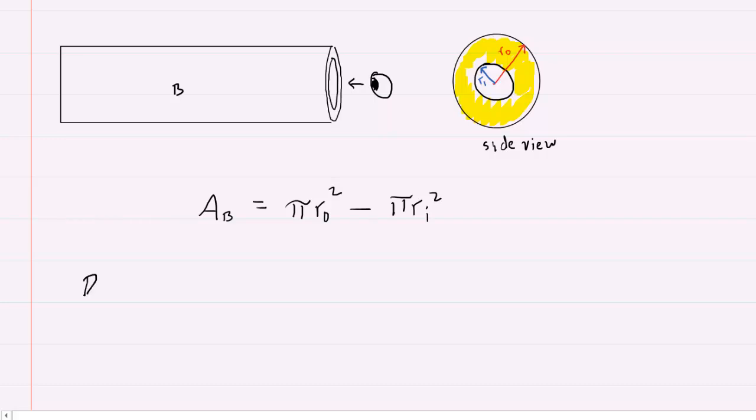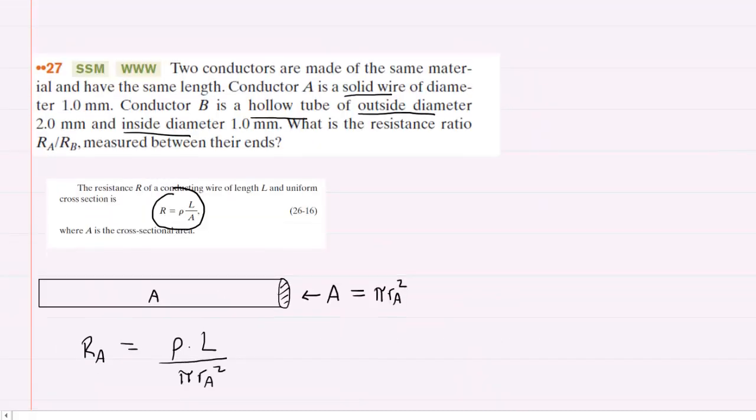So now we can begin to write out the equation for the resistance of conductor B. It would be the resistivity times the length divided by its cross-sectional area, which we just derived, pi outer radius squared minus pi times inner radius squared. If you're wondering why we don't put subscripts on the resistivity value and the length, that is because the question noted that the conductors are made of the same material, and they have the same length. So there would be no need to use subscripts of A for conductor A and subscripts B for conductor B, because that would indicate that the values are different in some way, but they're not. They're actually the same. So we'll just use rho and L for the resistivity and length of both of these conductors.